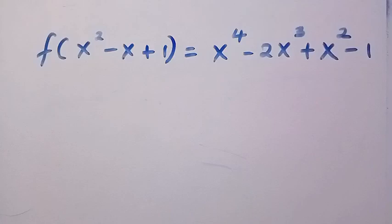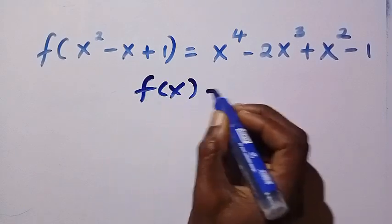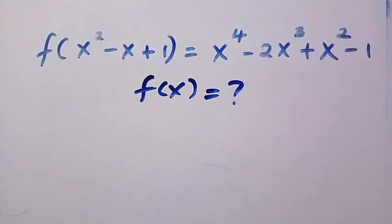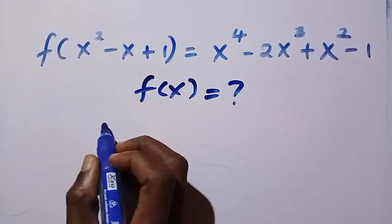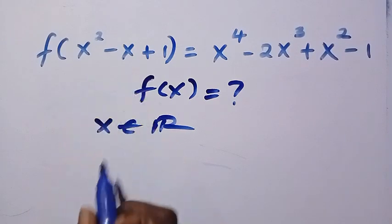Good day viewers, and you are welcome. Here we have an interesting functional equation: given that f of x squared minus x plus 1 equals x to the power of 4 minus 2x to the power 3 plus x squared minus 1. We want to find the explicit value of f of x for every x which is a member of the real numbers.